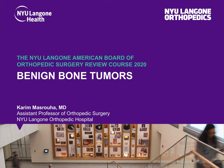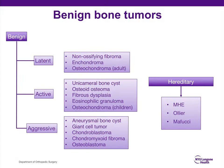This talk is on benign bone tumors. Benign bone tumors can be classified in multiple different ways based on histology and morphology. The Enneking classification of benign bone tumors is divided into three different types: latent, active, and aggressive. Understanding benign bone tumors in this manner is most helpful in achieving the most appropriate diagnosis and progressing with the most appropriate treatment. I'll also be discussing some hereditary benign bone tumors.